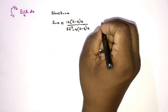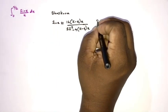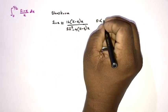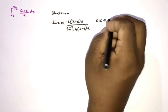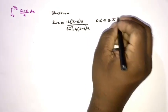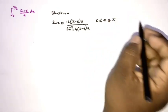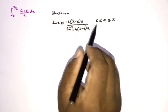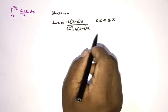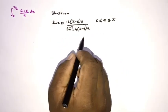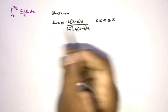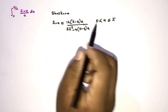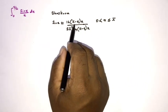This formula works for x greater than 0 and less than or equal to π, where angles are measured in radians. Let's look at the graph of sin(x) and this approximating function.